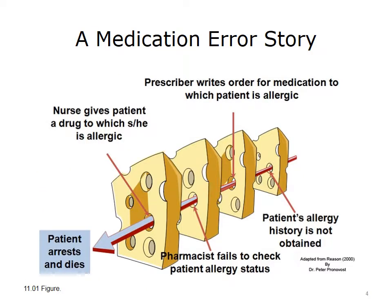Let's take a classic medication error using the Swiss cheese model of system failure proposed by James Reason. He likened the healthcare system to a stack of Swiss cheese slices, where each slice represents an action or event in the care delivery process. The holes in the cheese are places that a process can fail despite everyone's best intentions. Each cheese slice is a defensive layer in the process. When an error passes through one of the gaps in the line of defense, it usually bumps up against another defense. Sometimes, however, the Swiss cheese stacks line up such that all of the holes are aligned and the error reaches the patient, as in the case illustrated above, in which a pharmacist fails to check a patient's allergy status because the allergy history was not obtained, the prescriber wrote an order for a medication to which the patient was allergic, the nurse gave the patient the drug to which he or she was allergic, and the patient arrests and dies.